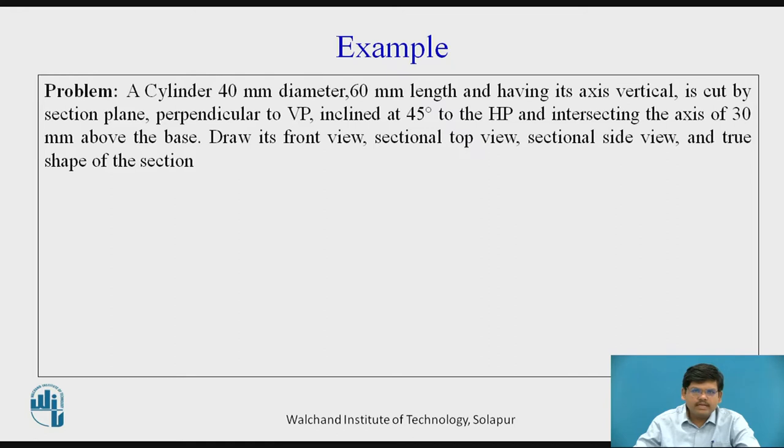So we have three conditions for the cutting plane or the section plane. First condition is, it is perpendicular to the vertical plane. Second condition is, it is inclined at 45 degrees to HP. And third condition is, it passes through a point 30 mm from the base.